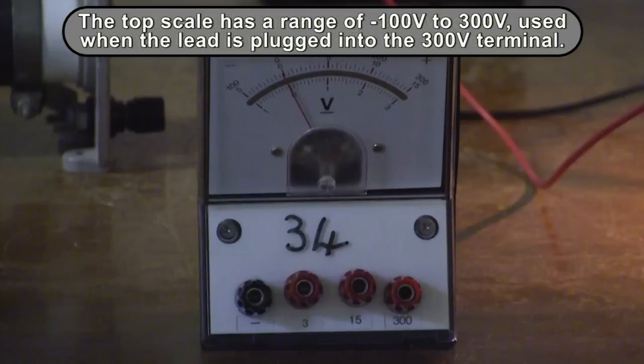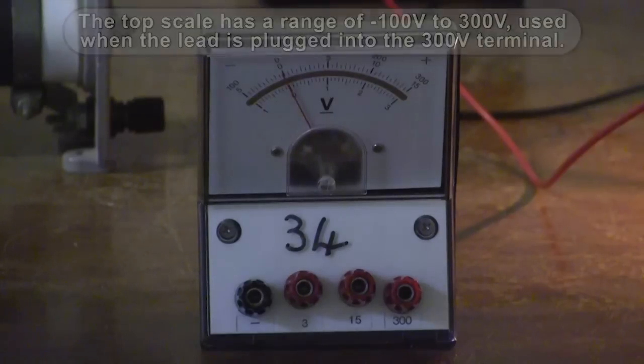Finally, the top scale has a range of minus 100 volts to 300 volts and is used when the lead is plugged into the 300 volt terminal.